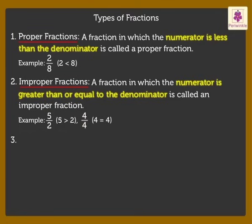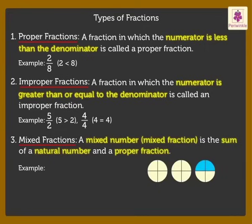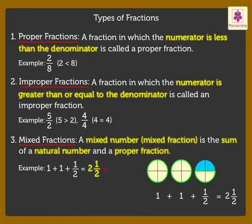3. Mixed fractions. A mixed number, also called as mixed fraction, is the sum of a natural number and a proper fraction. Look at the three circles. The first and second circles are completely coloured and half of the third circle is coloured. When added together, we get 2 and half. This 2 and half represents a mixed number. Here, number 2 is the natural number and half is the fraction.